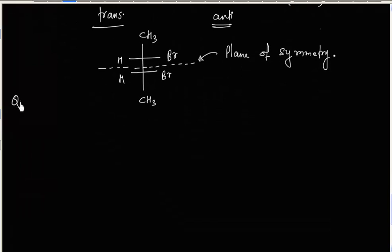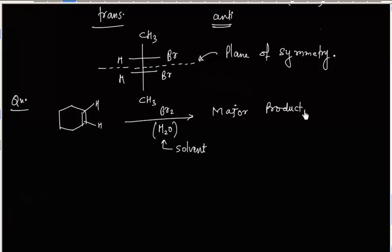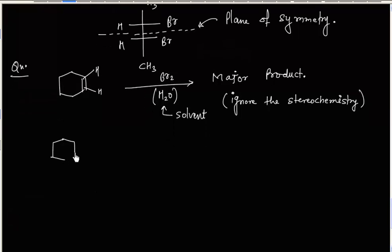Next problem: we have a double bond treated with bromine in the presence of H₂O. The solvent is water, not CCl4. What will be the major product? In the first step, again we will have the cyclic bromonium ion formed.